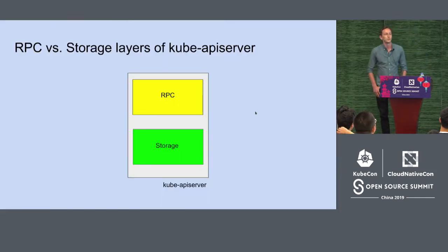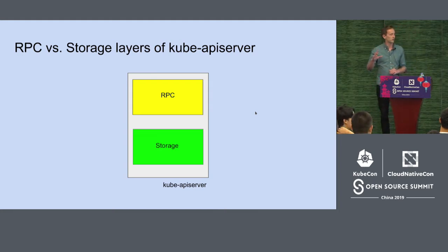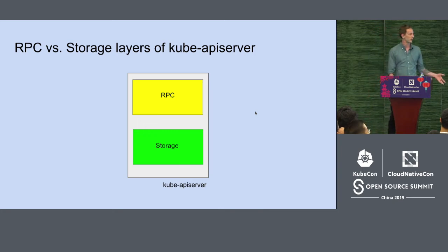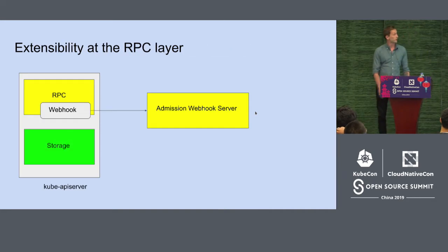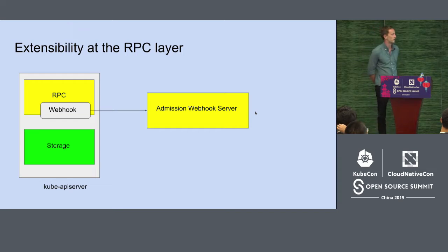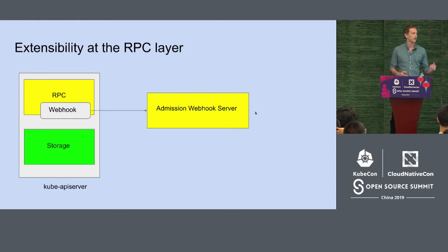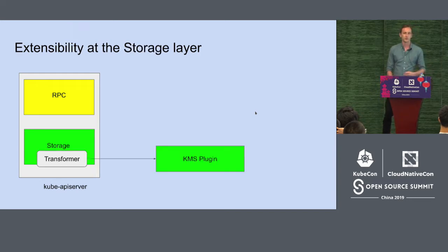To understand what storage transformers are, I want to look at Kube API server as consisting of two layers. You have the RPC layer, where your requests come in and out — it handles authentication, authorization, parsing, validation, all those things. And then there's the storage layer, which is essentially Kube API server talking to etcd and doing any serialization and deserialization. At the RPC layer, Kubernetes provides extensibility in the form of webhooks — you may have heard about admission webhooks.